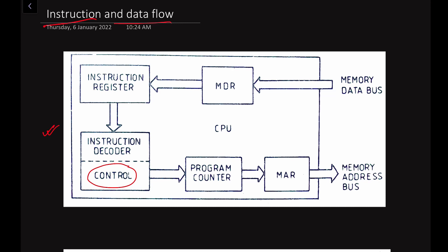In the 8085 microprocessor, we have an 8-bit data bus — 8-bit is 1 byte. Therefore, it is an 8-bit microprocessor, meaning it can process 8 bits of data at a time. The address size is 16-bit. We have the multiplexed address or data bus AD7 to AD0 — it can be used as an address bus or as a data bus. In this video, we will learn how the instruction is processed by the microprocessor, or the flow of the instruction word and how the opcode is fetched from the memory.